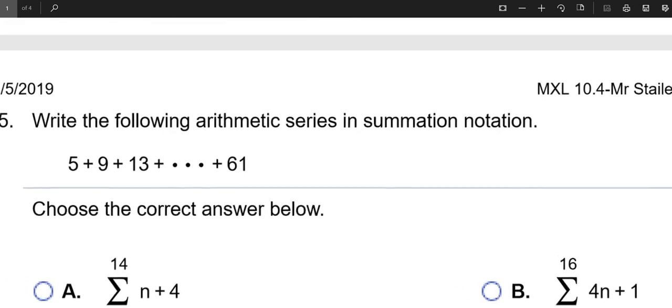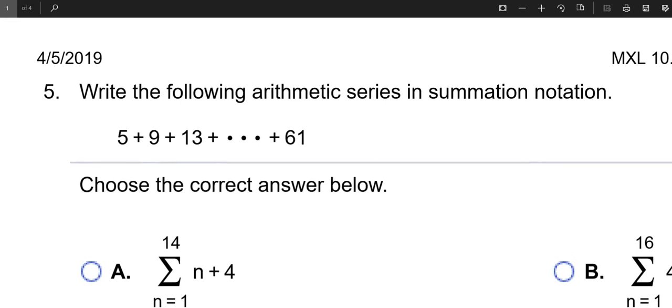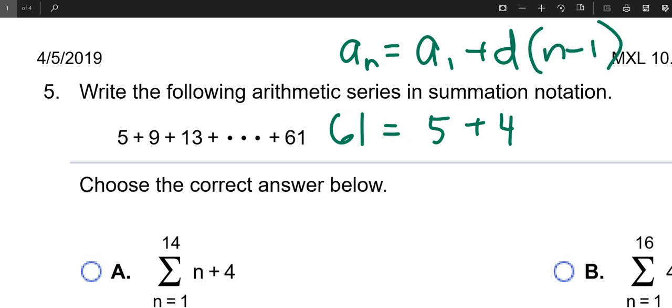How about number 5? We need to figure out how many terms we have here. Okay, we've got the last number, yep. And the first number, right? Do we know the common difference? Yeah. 4. Okay. So we don't know how many terms there are, so that's what we need to find first.